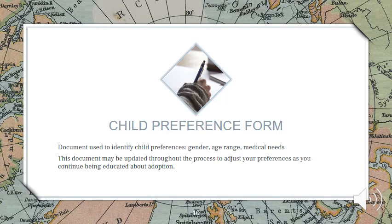The next document is the child preference form. This is used to identify your preferences for a child, such as gender, age range, and medical needs. It's important to understand that this document may be updated throughout the process to adjust your preferences as you continue being educated about adoption, talking to others who have adopted children with specific needs, and meeting with medical professionals to determine what you feel you can handle. This form is used by your social worker in writing your approval statement in the home study, and by our program team as we watch the shared list for children.